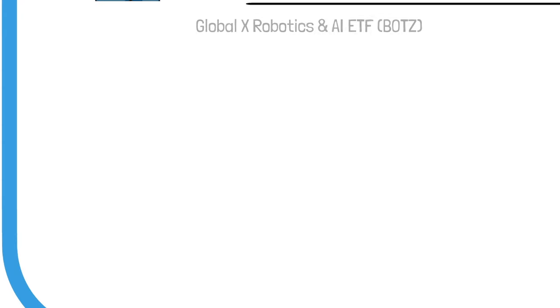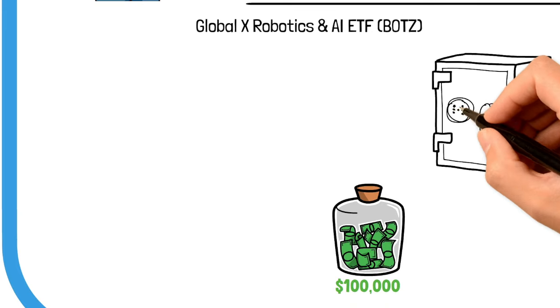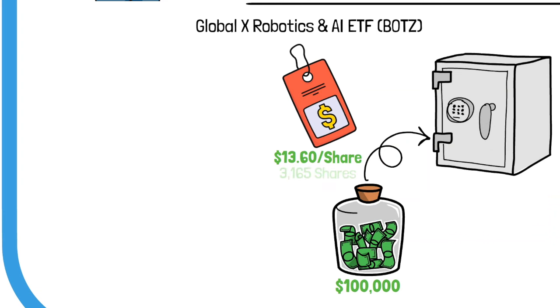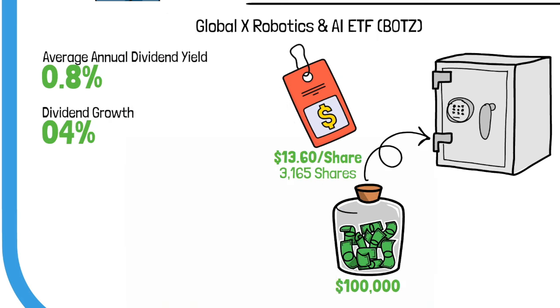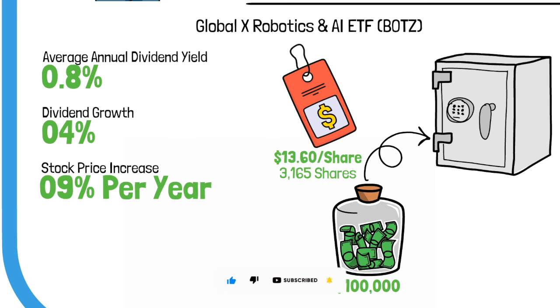Lastly, consider the Global X Robotics and AI ETF. With an investment of $100,000 at a stock price of $31.60, you would acquire about 3,165 shares. With a historical average annual dividend yield of 0.8% and an expected rise in dividend payouts of 4%, plus a stock price increase of 9% per year, and reinvesting your dividends, the growth potential is notable.